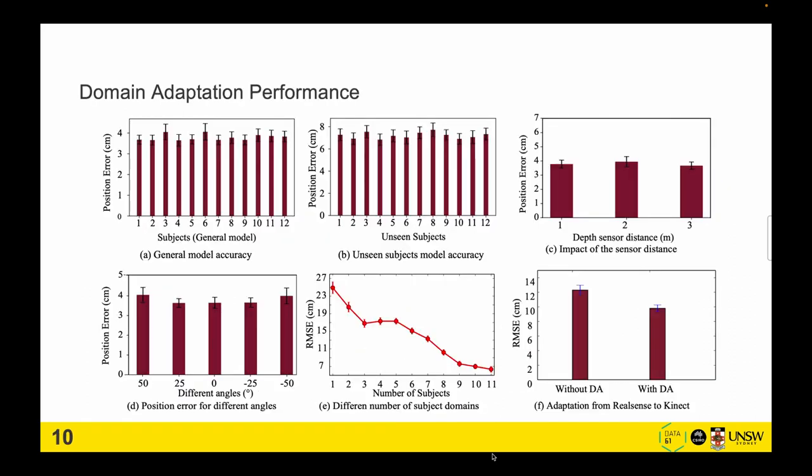We also show the domain adaptation performance. For a general model that includes all subjects, the general accuracy of SwingNet is around 3.8 centimeters. For leave-one-out subject evaluation, we show accuracy overall is around 7.6 centimeters.